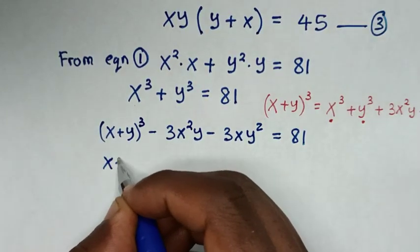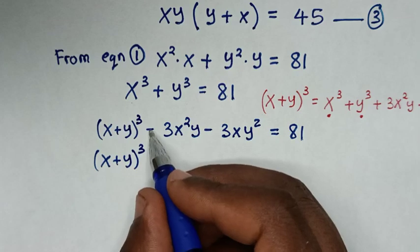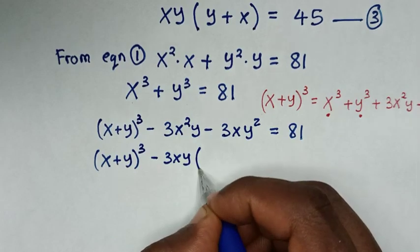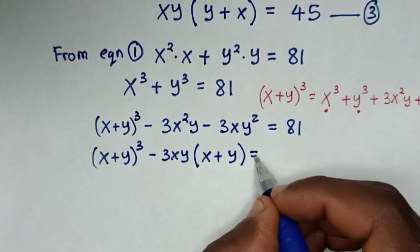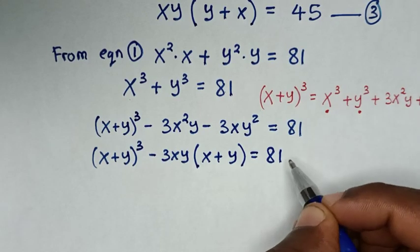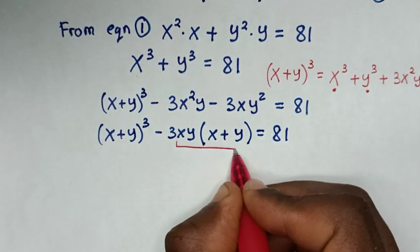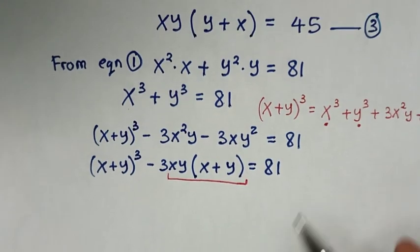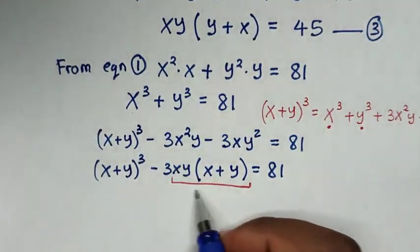Then our equation will be (x + y)³ — here negative 3xy is common, so we take negative 3xy out of the bracket — then it will be (x + y)³ minus 3xy(x + y) is equal to 81. From this part, xy times (x + y), which is from equation 3 is 45, so we substitute 45.